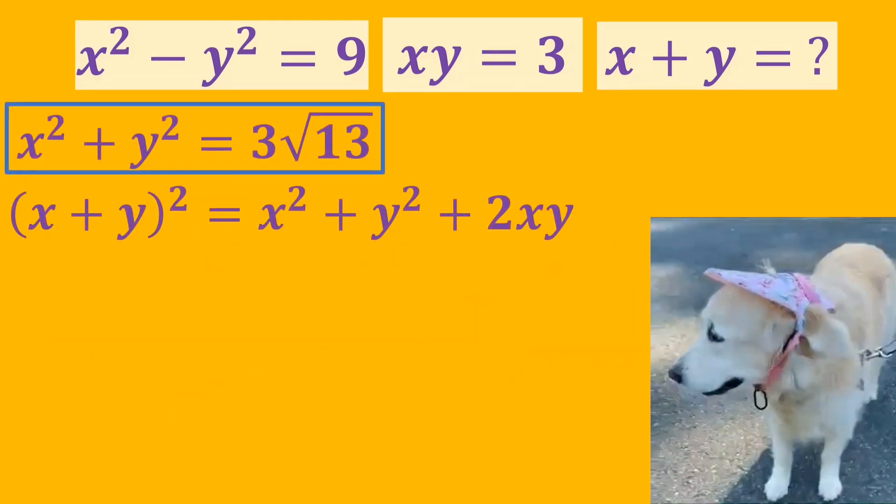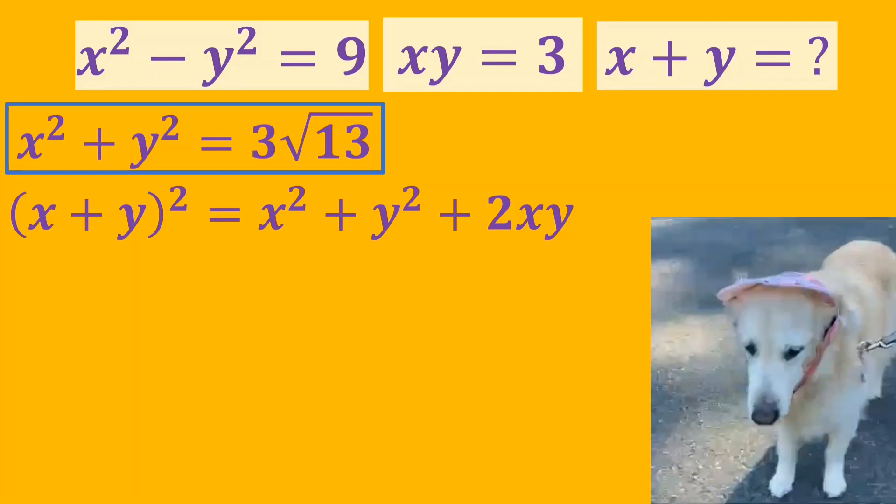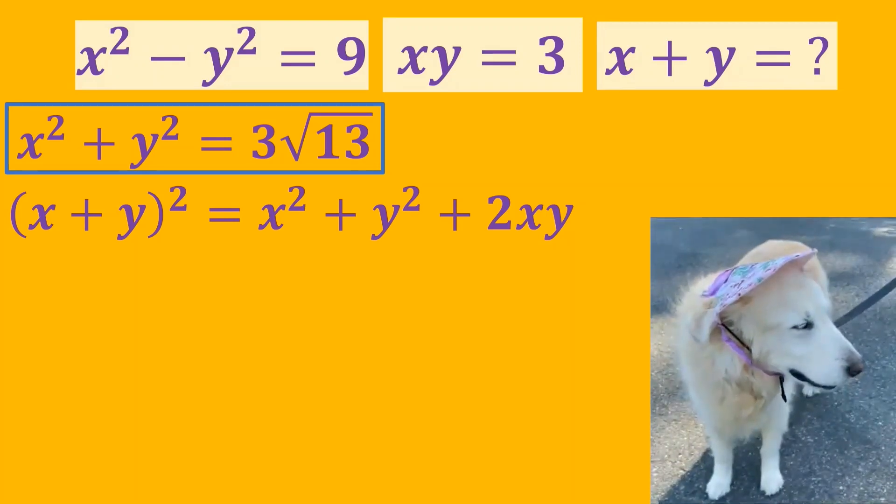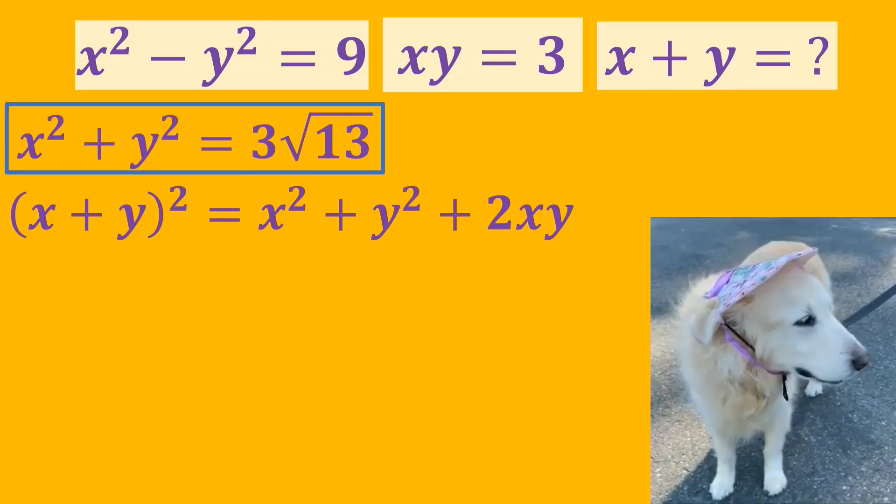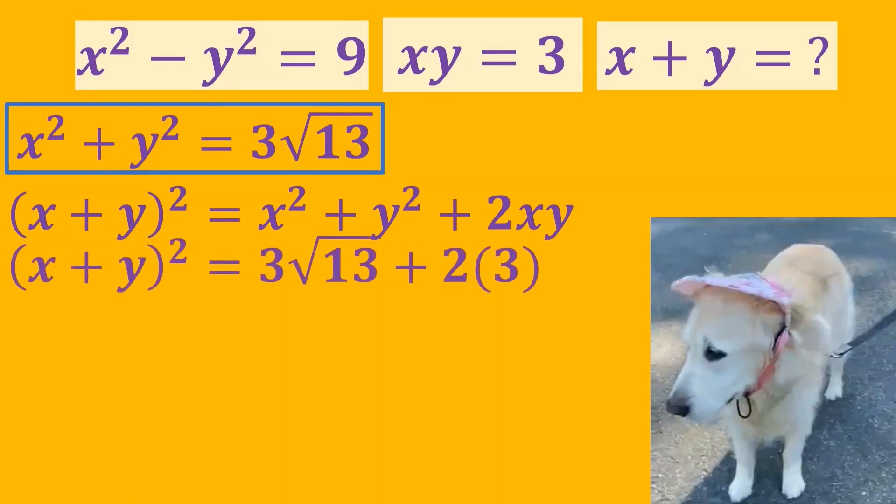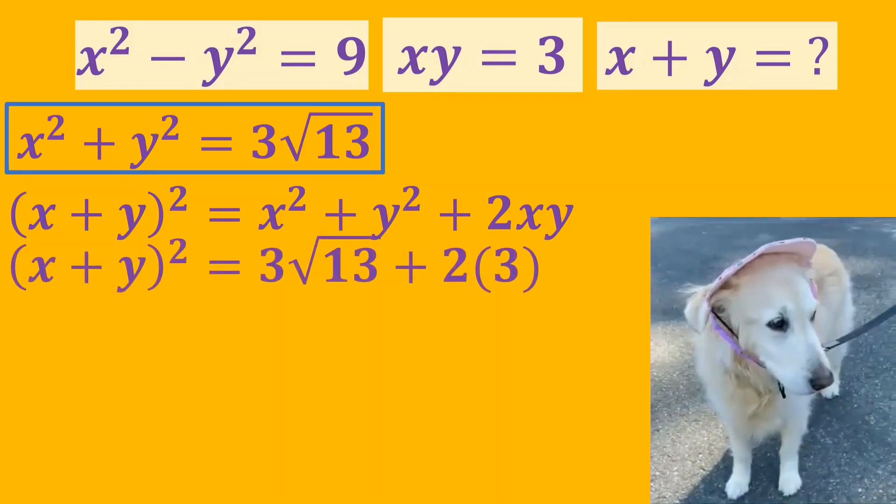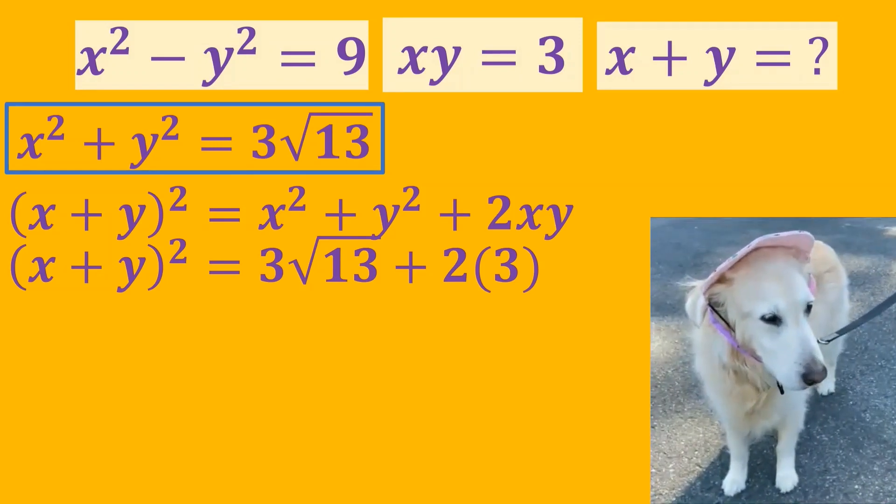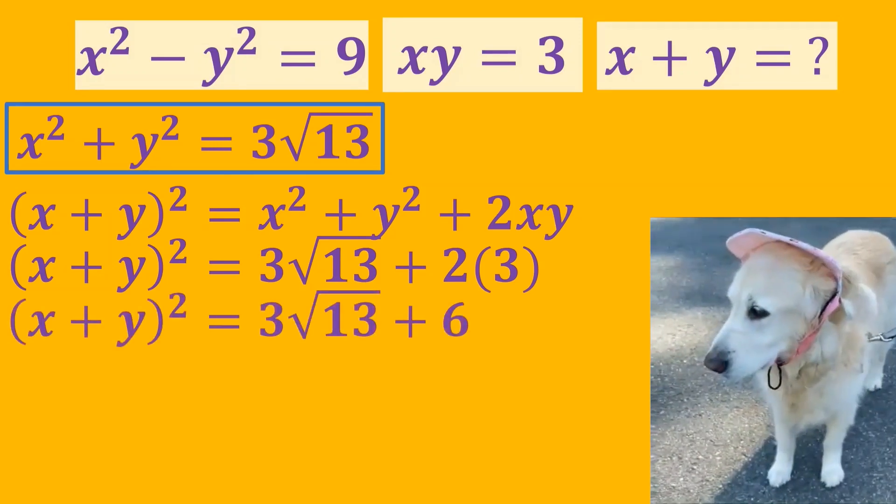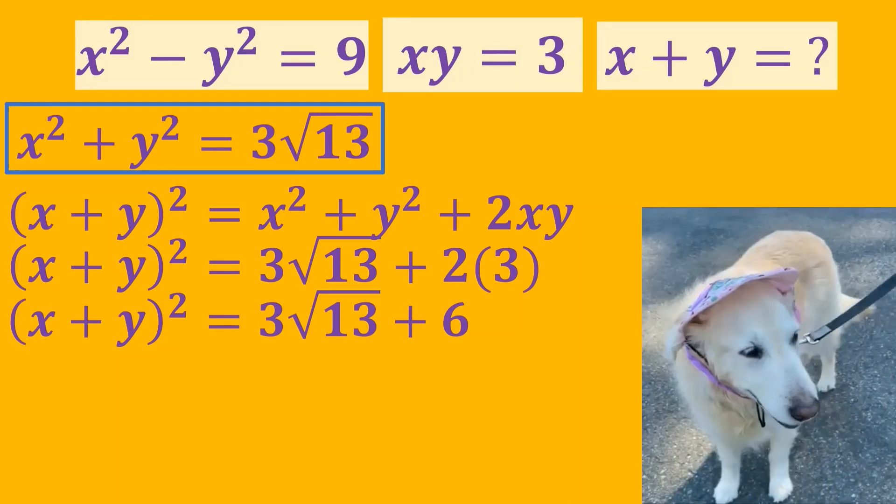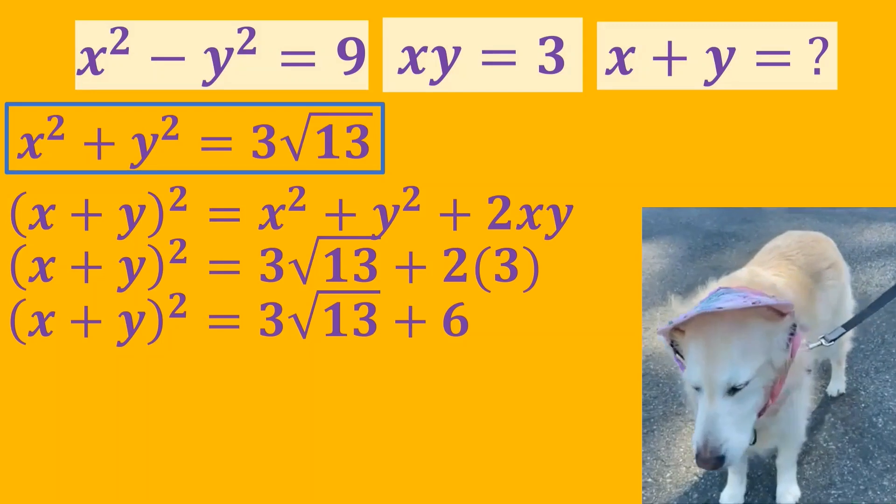The question was the value of x plus y. So we need to find the square of the sum of x and y. We write the value 3 times square root of 13 instead of x squared plus y squared. The square of the sum of x and y is 3 times square root of 13 plus 6.